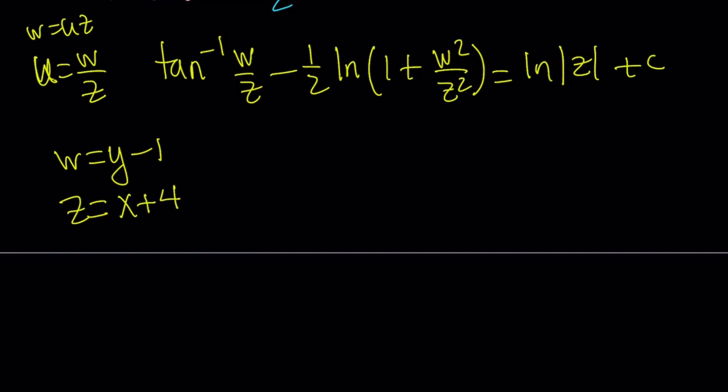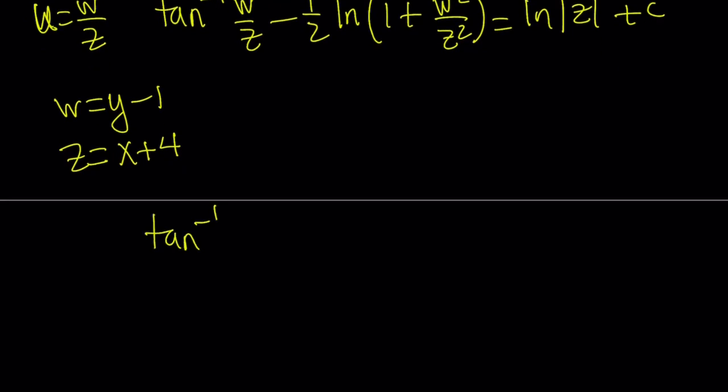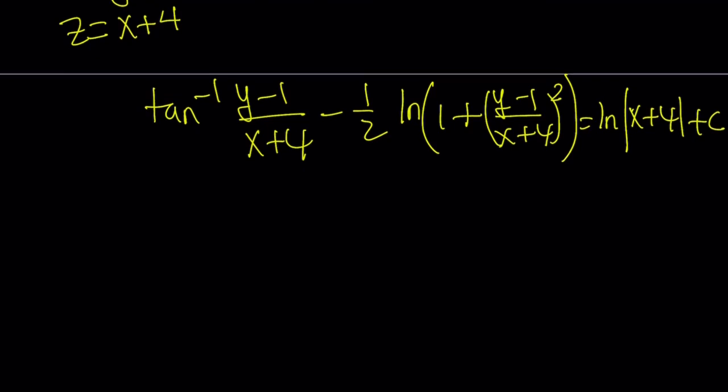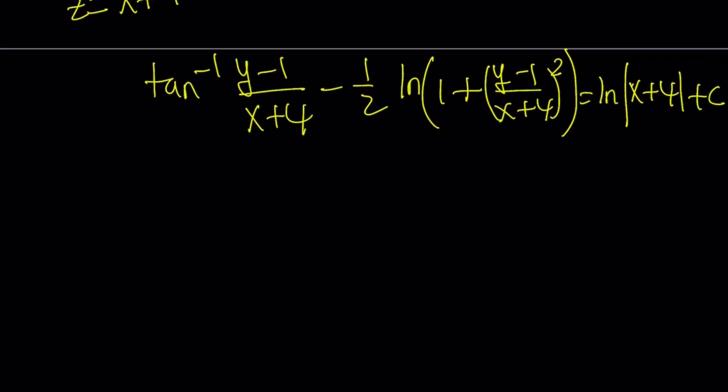tan inverse w, which is y minus 1 over z, which is x plus 4, minus 1 half of ln 1 plus, now, I can write this as a quotient first, w over z and then square it that way. w over z squared and then finally, ln absolute value of z, which is x plus 4 plus C. And, this basically gives us the equation in terms of x and y, but unfortunately, it's not possible to isolate y from this equation. It's going to be very messy and it's impossible, basically.